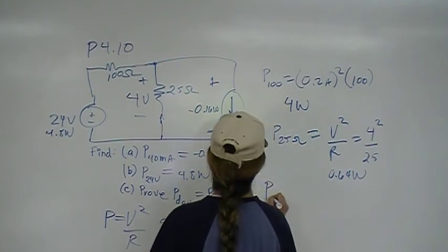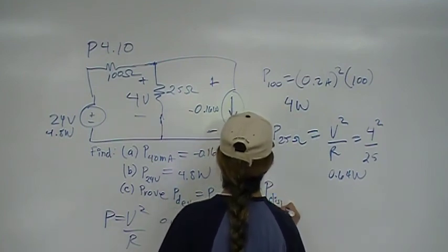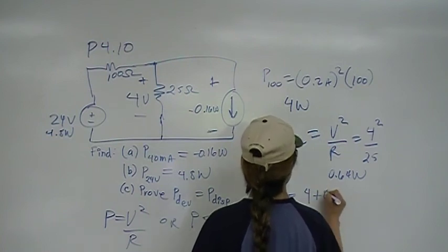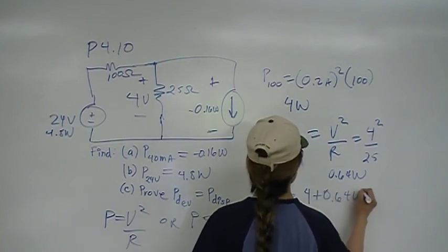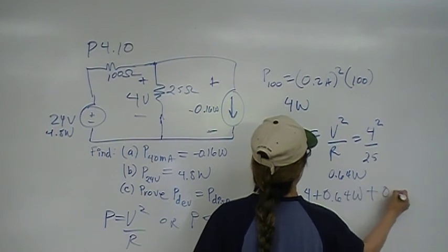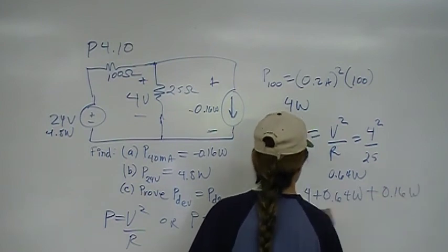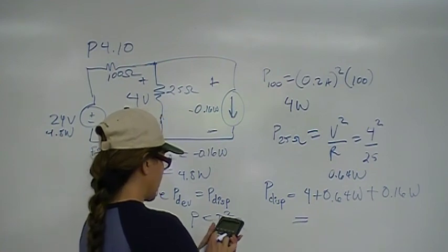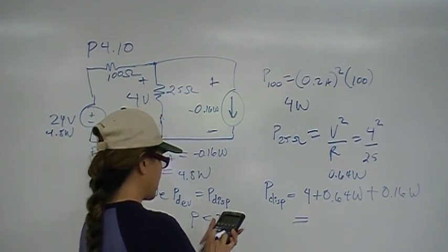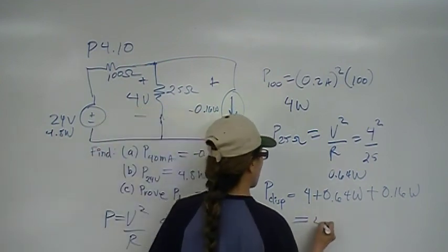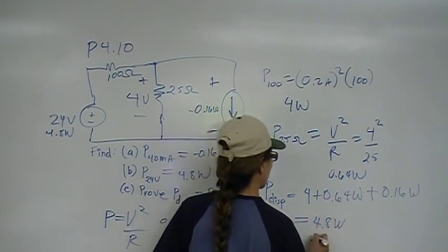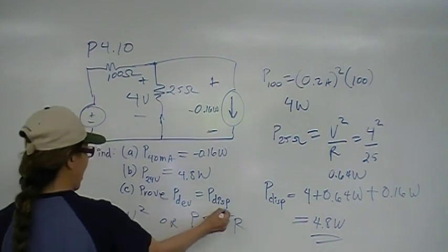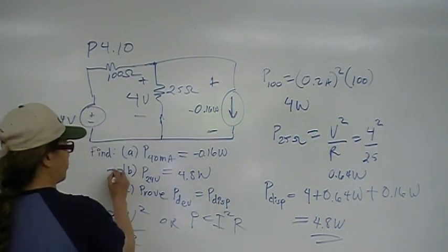So, power consumed or dissipated is equal to 4 watts plus 0.64 watts plus 0.16 watts. That gives us 4.8 watts. Therefore, we prove that power dissipated is equal to power developed for part B.